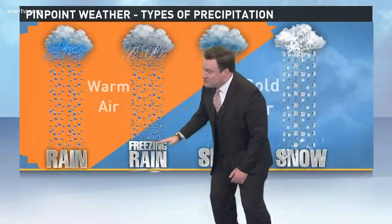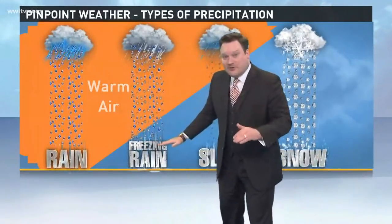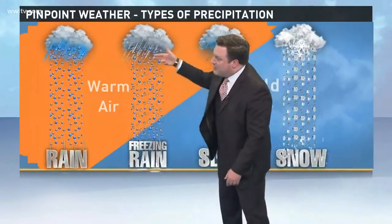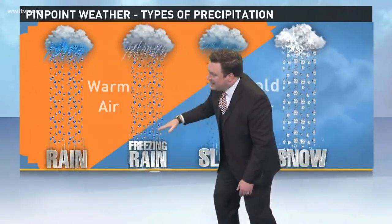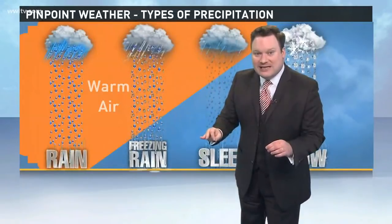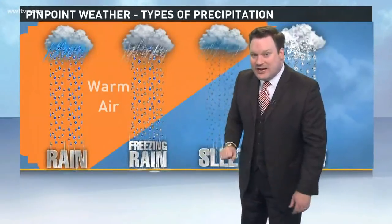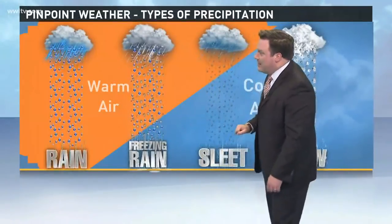Freezing rain is when you have warm air aloft, and just at the surface you have sub-freezing temperatures. So you actually get liquid rain falling, and on contact with the surface, it freezes. Temperatures over the next couple of days, going into Friday, will not be below freezing at the surface, so we're not expecting freezing rain.